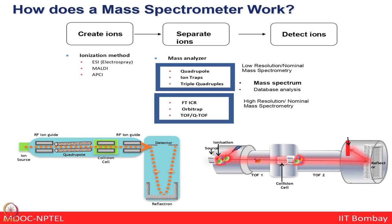Very broadly, for any mass spectrometer: first you have taken the protein of interest, you have done digestion of that protein, you have the peptides in solution form which you want to further separate. A promising way of doing that is an LC-MS/MS based approach, especially using electrospray ionization as a way to do ionization.